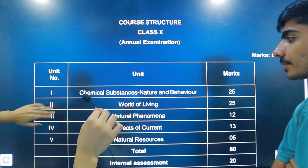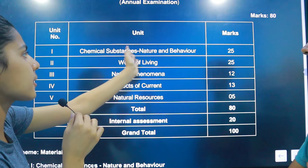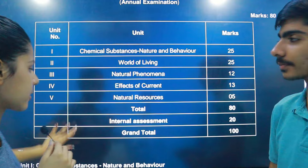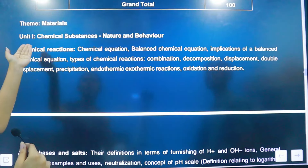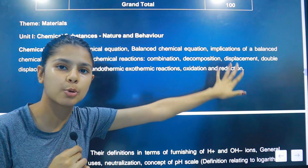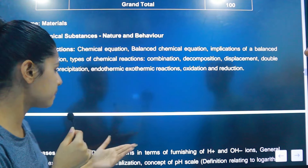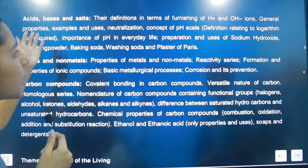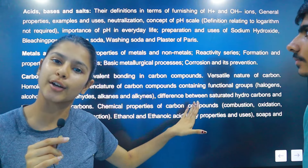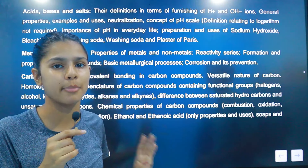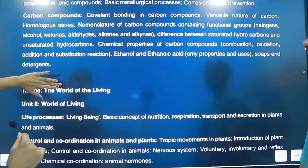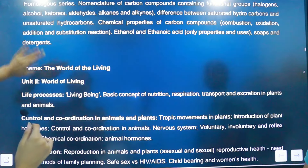Now let's look at Science. In Science, you will see the units: Chemical Substances, World of Living, and Natural Phenomena, with marks breakdown given. The first chapter is Chemical Reactions. These are all the topics you have to study — the rest you don't need to study. You don't need to read everything. Open your book, look at the PDF and match the topics. There are 4 chapters in chemistry: Metals, Non-metals, Carbon and its Compounds.